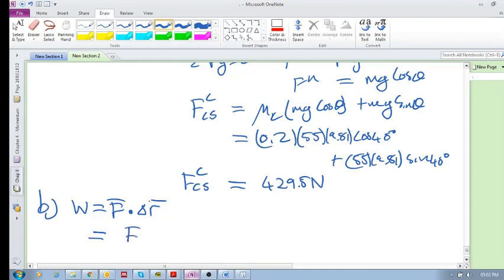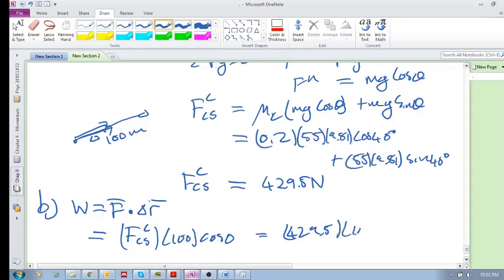And then what is your delta r? Remember he moved up 100 meters, so that's 100. And then what is the angle? We know that the force and the displacement are both in the same direction, so we've got cos of zero. So we've got 429.5 times 100 is equal to 42,950 joules.